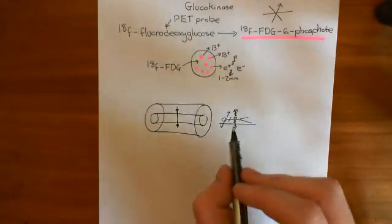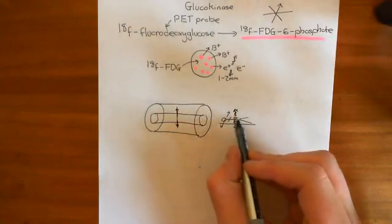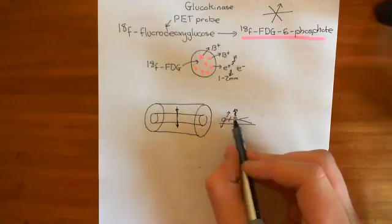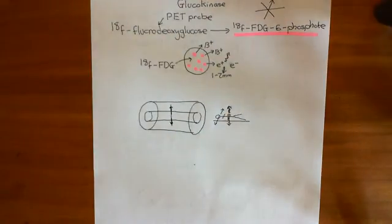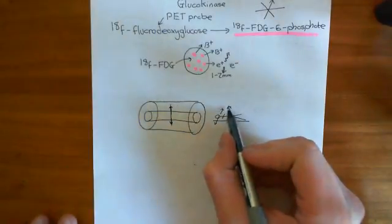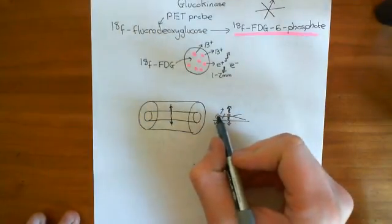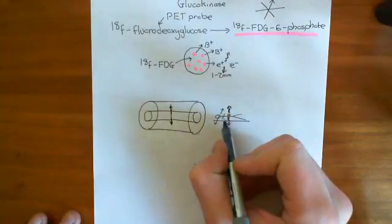And what you'll find is that if this person has a tumor, the positron-emission tomography scan will show that that area is far more metabolically active, i.e. you're getting a huge amount of gamma radiation coming from this area, and not so much maybe from other areas.